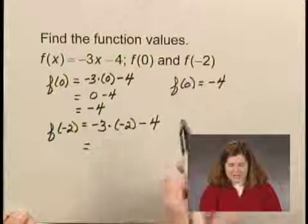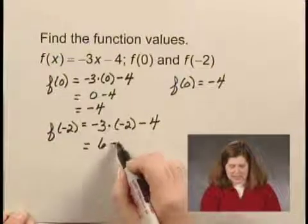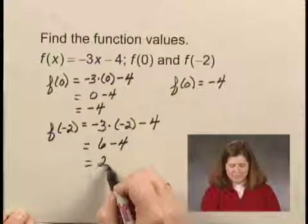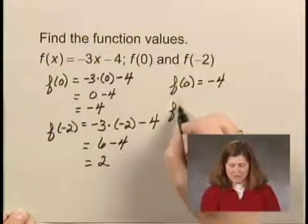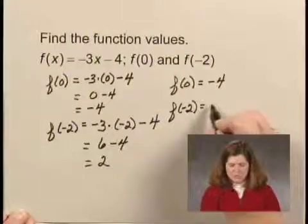Negative 3 times negative 2 is 6. 6 minus 4 is 2. So f of negative 2 equals 2.